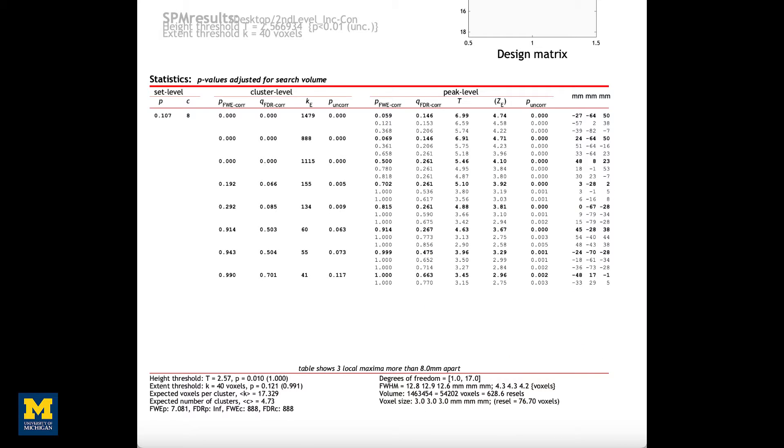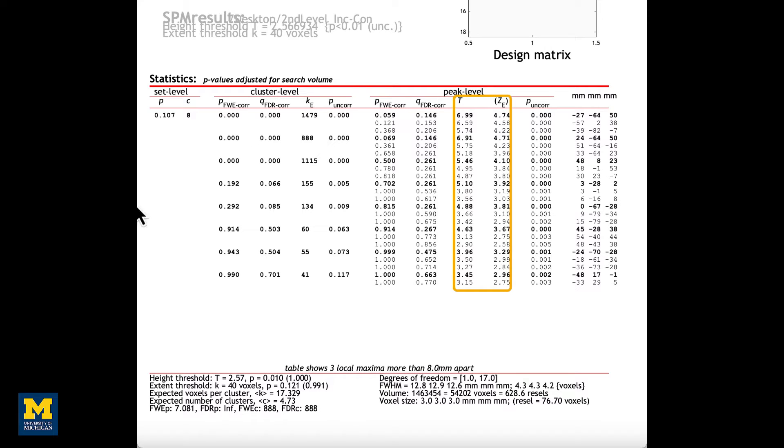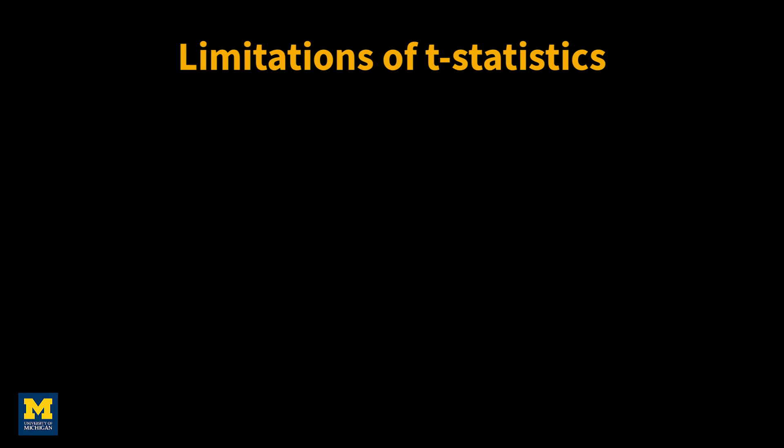In the results table, it's also common to report either the t-statistic or its equivalent z-score for each cluster. While this may seem reasonable, it can also obscure the full picture and give a distorted view of the practical significance of the result.